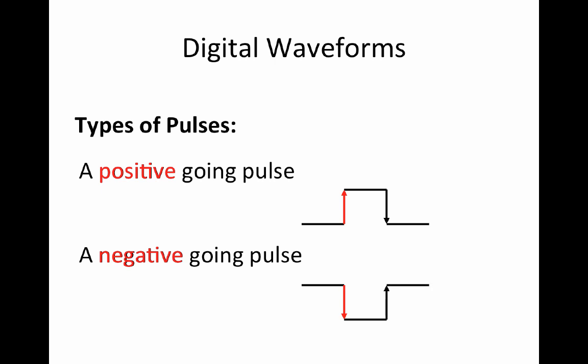These pulses are what we call ideal pulses and they transition from low to high or high to low instantaneously. In practice this will never happen as there will always be a time required to transition between states. That said, for most digital work we can assume ideal pulses.